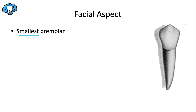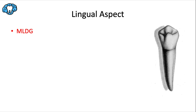It almost looks like the mandibular canine if it were squished down to be a lot shorter. One of the most defining features of this tooth is seen in the lingual view — that's the mesiolingual developmental groove, which occurs at the mesiolingual line angle. We'll talk about it again when we get to the occlusal aspect, but it's the key thing to remember for the lingual aspect.